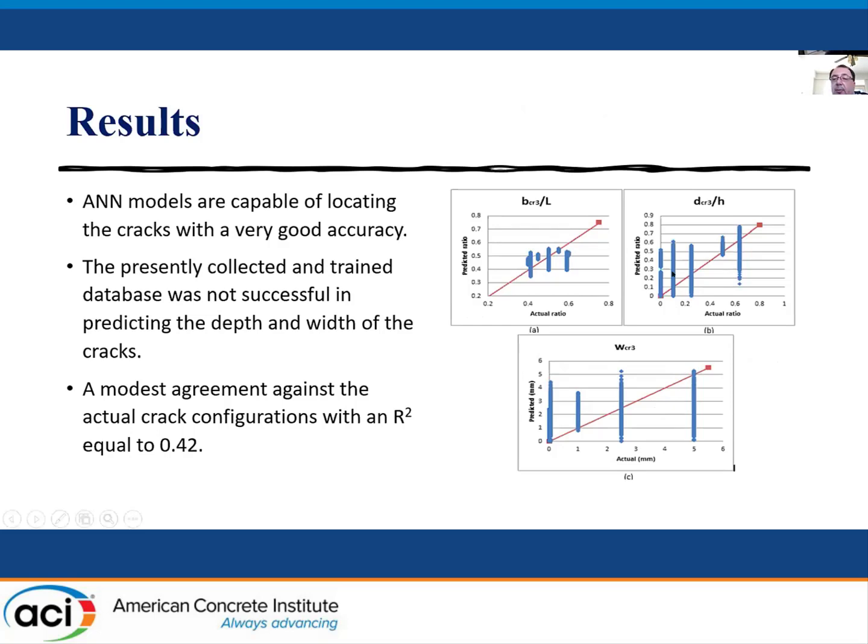However, it fails to predict the depth of the crack versus the height of the section and the width of the crack, which are to be expected, because the variations in these 9 K percentages or ratios are not enough to tune towards these small variables that are changing.